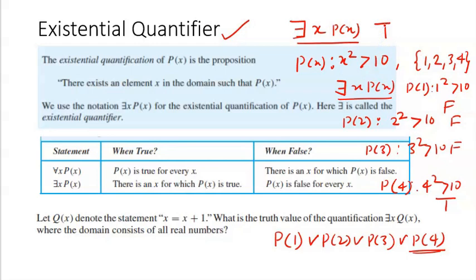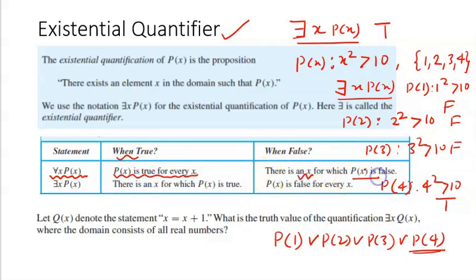In the case of the existential quantifier, we just need to find one value of x for which p(x) is true. It will be false only when p(x) is false for every value of x. Looking at the summary table: 'for all x, p(x)' is true when p(x) is true for every x, and false when there exists even one x for which p(x) is false. 'There exists x, p(x)' is true when we find just one value of x for which it is true, and false when p(x) is false for every value of x.